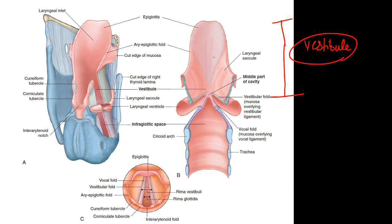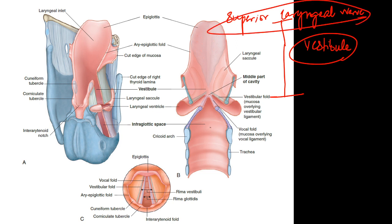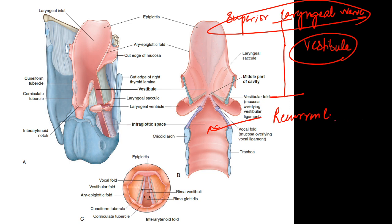You should know that the area above the vocal cords — the sensory supply of the area above the vocal cords — is supplied by the superior laryngeal nerve. The area below the vocal cord — the sensory supply of the area below the vocal cord — is supplied by the recurrent laryngeal nerve.